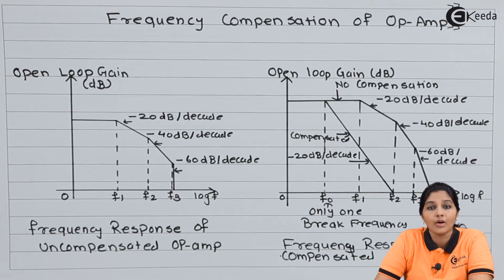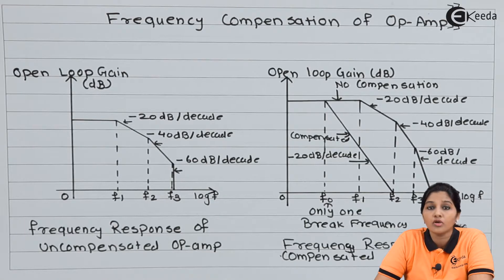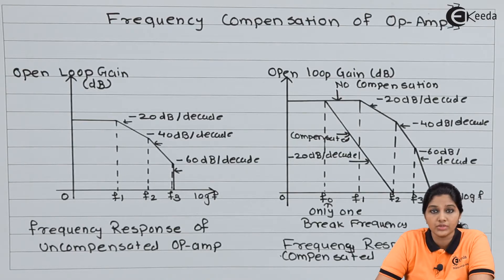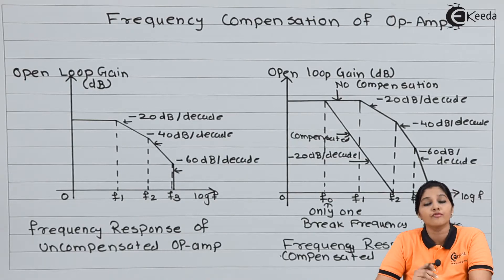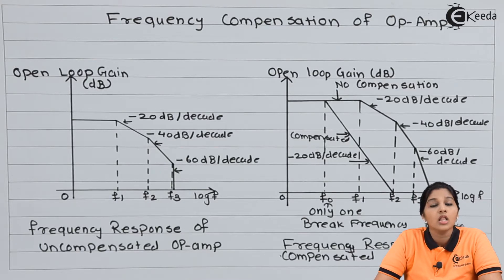These multiple break frequencies make the op-amp circuit unstable. Therefore, it is very important that in order to make the op-amp circuit stable, we require only one break frequency, and for that purpose we require a compensating network for the uncompensated op-amp.